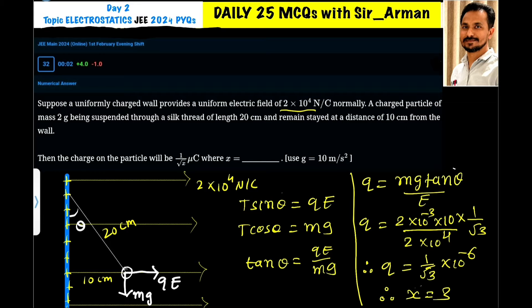Then the charge on the particle will be 1/√x microcoulombs, that is q equals to - we have to find the value of x here. See what is happening here: the electric force due to this charged wall is trying to push this charged particle away.